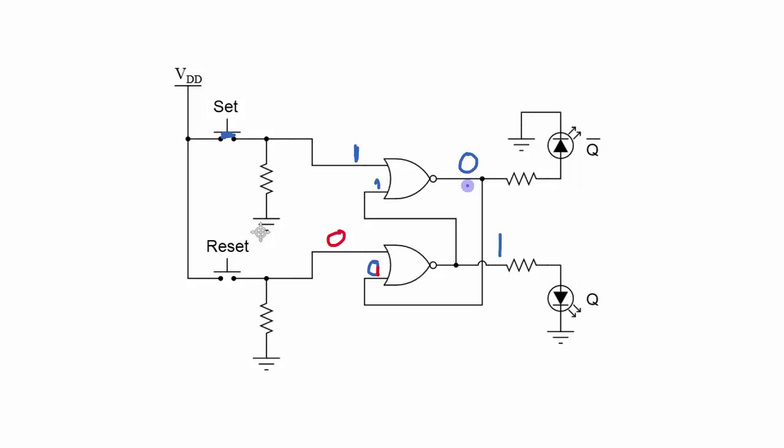The next thing that's going to happen is that set is going to be released. So set goes back to a 0. That turns the signal here to a 0. 0 NORD with 1 is still 0. And since this signal is not changing, it's still a 0. And this signal on the reset is not changing, it's also still a 0. And 0 NORD with 0 is a 1. The Q and the Q bar do not change when that set signal is released.